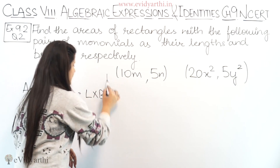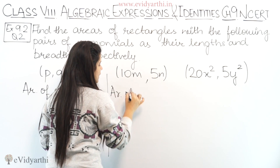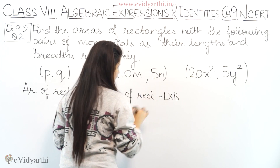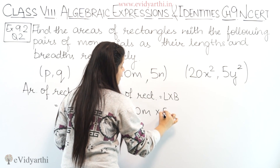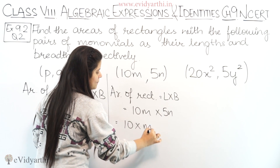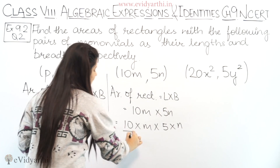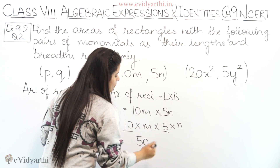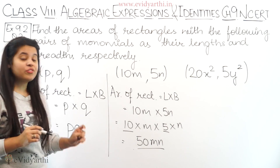Moving to the second part: the pair is 10m and 5n. Again, area of rectangle equals L into B. Length is 10m and breadth is 5n. 10m means 10 into m, and 5n means 5 into n. We can multiply the numbers: 10 into 5 is 50. So the answer is 50mn.